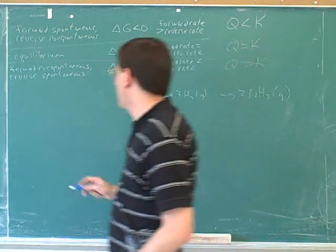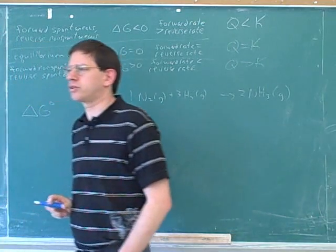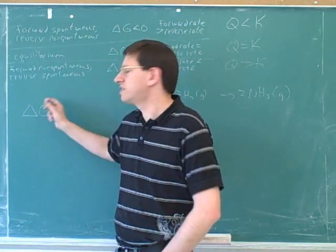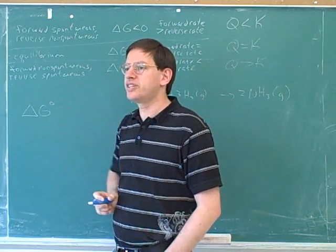Let me briefly remind you about delta G with a little circle, which you might have seen. The little circle here means standard, at standard conditions.